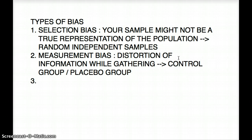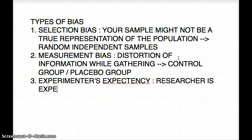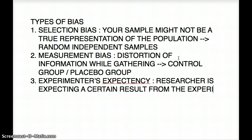The next one is experimenter expectancy bias. For experimenter expectancy bias, a researcher is expecting a certain result from the experiment. That defeats the whole purpose — you have to be completely open-minded and you cannot expect a certain result. If you do that, then your experiment has no validity. You can beat that kind of bias by having a double-blind design of your experiment.